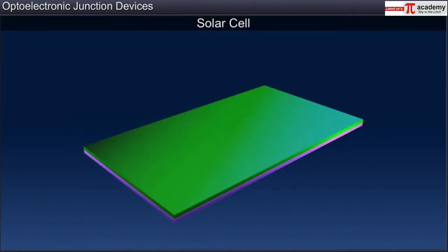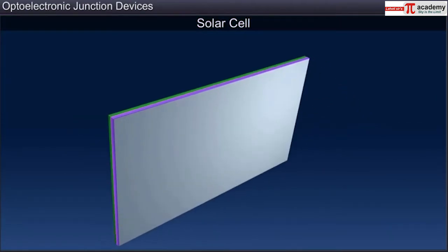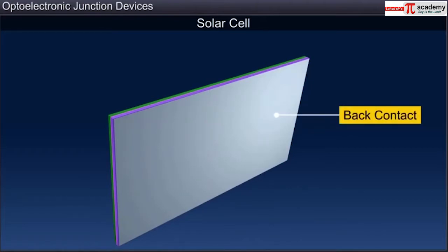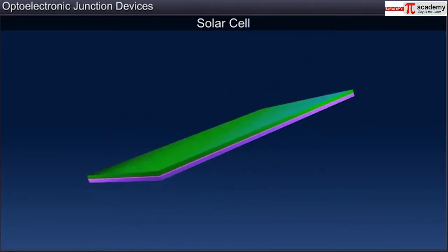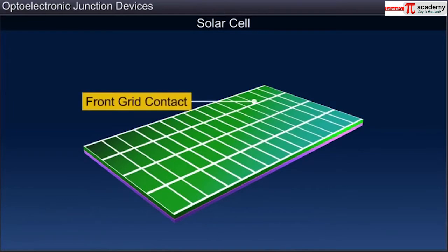The back of the P-side is coated with a metal to form a metallic back contact. The top of the N-side is provided with a metallic grid contact that covers only a small percentage of the total exposed area of the cell.